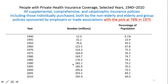This chart shows the percentage of the population with private health insurance coverage from the 1940s to 2010. The percentage increased over time, peaking at 76.3% in the mid-1970s, and then decreased after that.